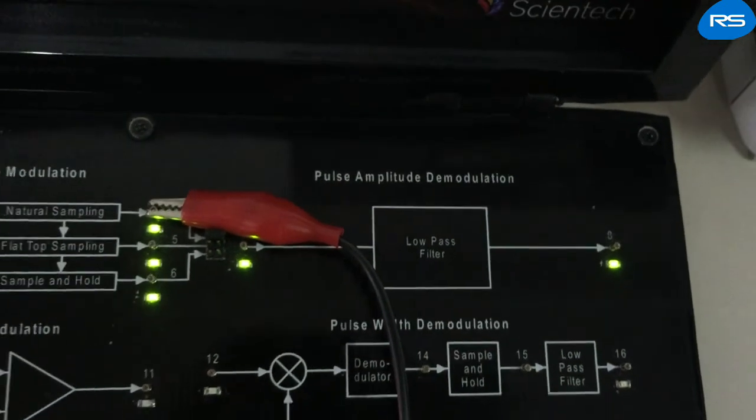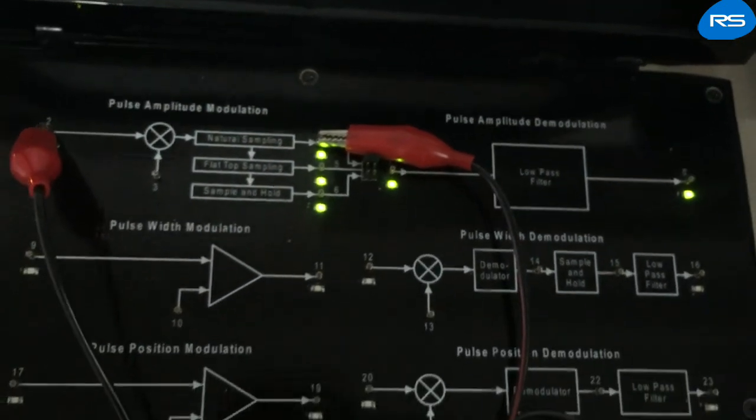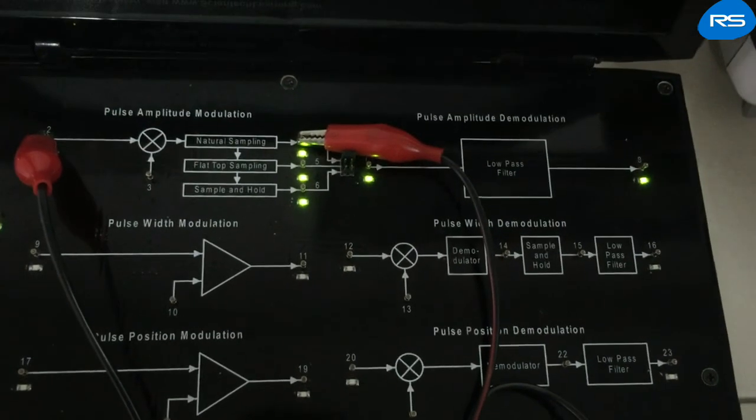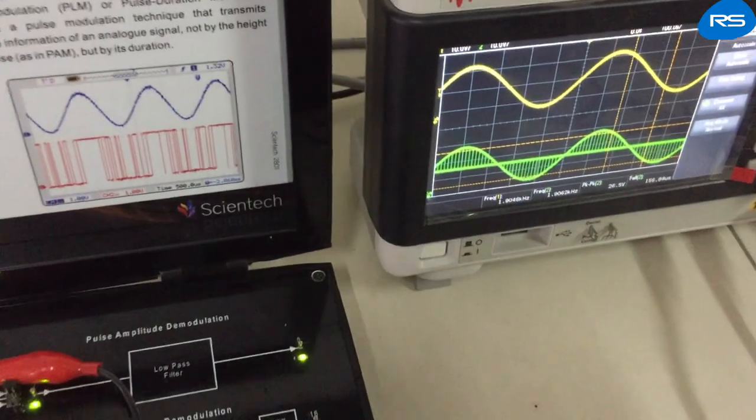So, we can observe the message signal, modulated wave and demodulated wave on the oscilloscope.